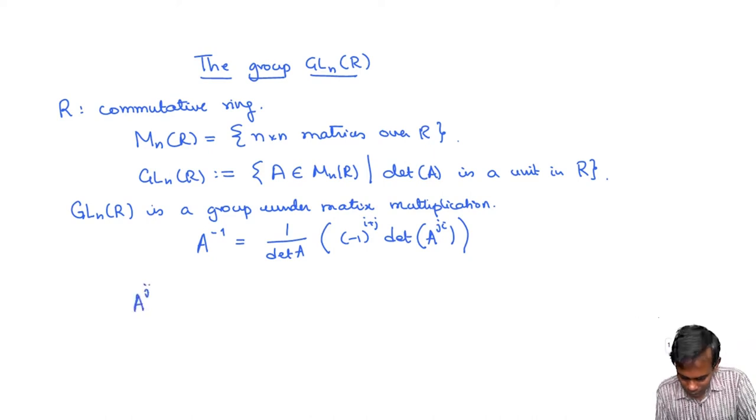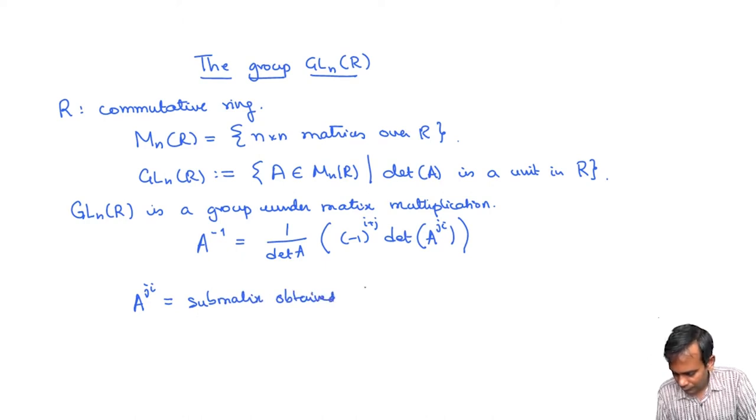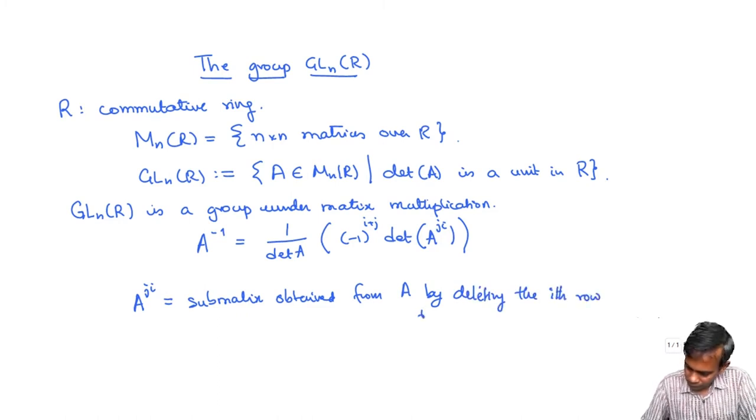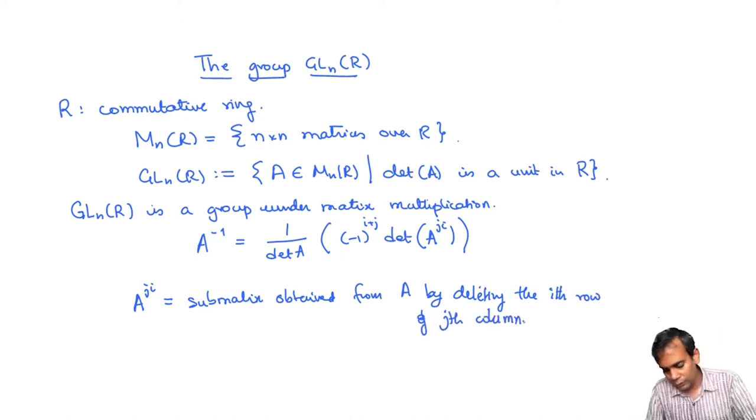So A superscript ji is the submatrix obtained from A by deleting the ith row and jth column. And I'm sure most of you have seen this in your linear algebra course as a formula for the inverse of a matrix.